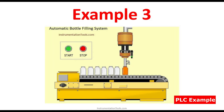In the previous sessions, we have seen two examples. This is the third example, and here we have a logic. We are going to take an automatic bottle filling system. First, I am going to explain the concept. Second, we will take the IO list. Third, we will discuss what logic we can create. Fourth, we will write the logic in the Omron PLC.